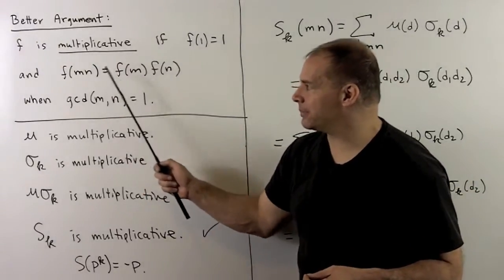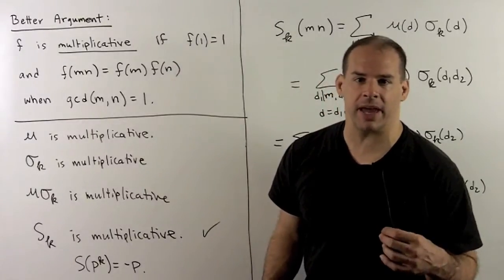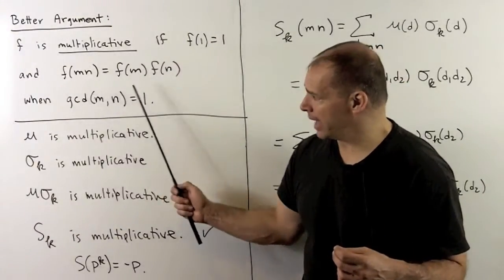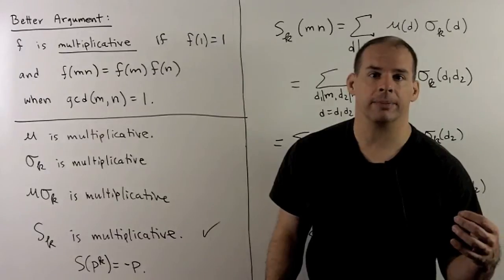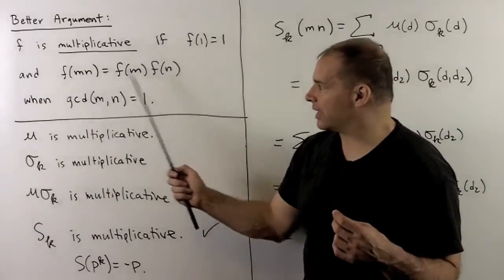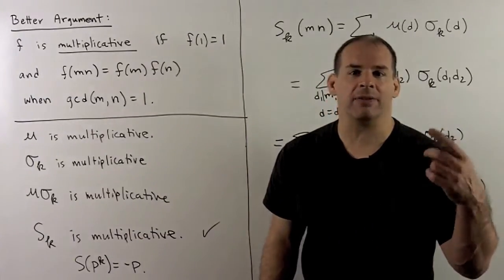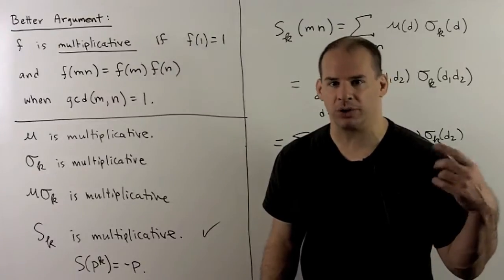And f of m times n equals f of m times f of n, whenever m and n are relatively prime. So what this says is that I can build up f just by knowing its values on the powers of primes.